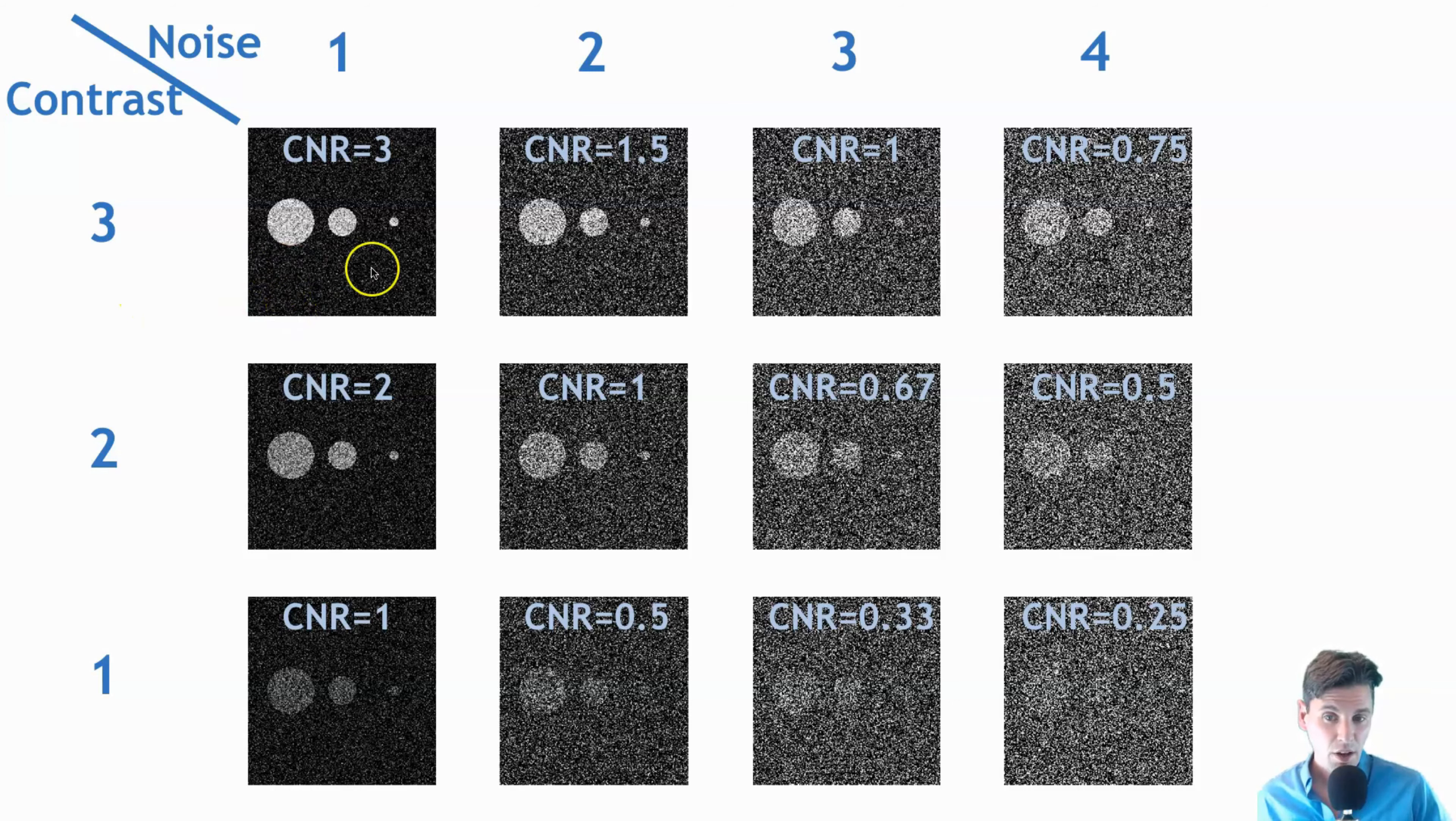And then if we go to noisier and noisier cases, we can say the contrast to noise ratio, we just take this level of contrast and divide it by this level of noise. So if we go just across this table here, we can see that we're going to lower and lower contrast to noise ratio. So it becomes harder to visualize the structures.